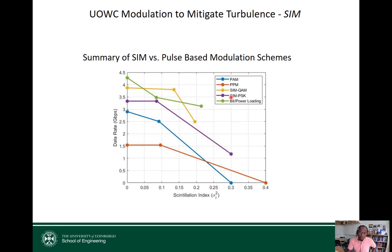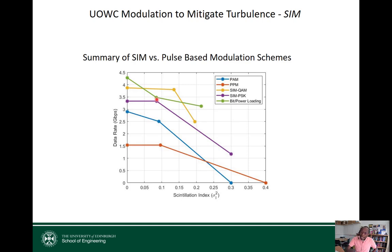We also compared SIM with other techniques from the literature. SIM with QAM performs well — up to a scintillation index of about 0.14, performance is stable, then drops as average SNR decreases. The same trend holds for other techniques. Notably, the bit and power loading algorithm performs highest in still water but degrades rapidly as turbulence increases, because bit and power loading requires accurate channel state information, which is unavailable when the channel fluctuates due to turbulence.